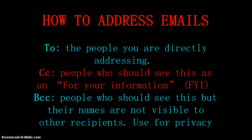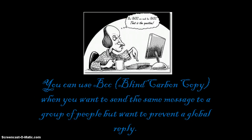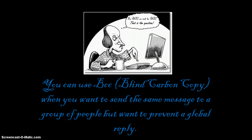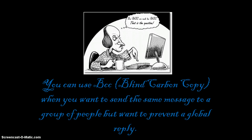How to address emails: 'To' is the person you are directly addressing. CC are people who should see this as an FYI — for your information. BCC is people who should see this, but their names are not visible to other recipients, and you use it for privacy. BCC stands for blind carbon copy. You want to do that when you want to send the same message to a group of people but want to prevent a global reply. When you hit reply all, it does not go to the BCC people — it only goes back to the To and CC people.